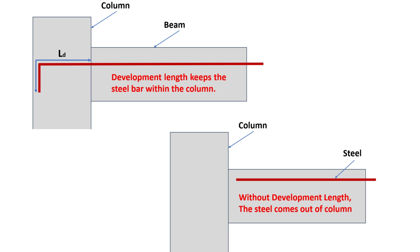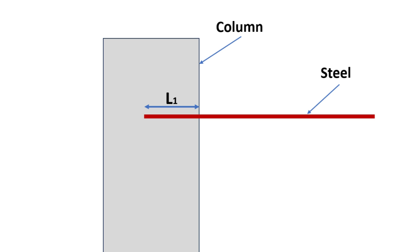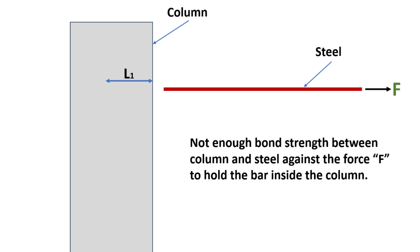Let's break it down further. Imagine a steel bar embedded in a column to a length, let's call it L1. When a tensile force F is applied, the bar might pull out of the column. This indicates that L1 is insufficient to maintain the desired bond strength.